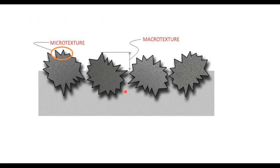The second factor is the microstructure of aggregate and macrostructure of the surface. The microstructure of an aggregate is visible only through a microscope and corresponds to the grain boundaries of aggregate particles. Macrostructure is provided by the surface layer and it controls the wet grip. Therefore skid resistance depends upon both the microstructure of individual aggregate particles and the macrostructure of the surface.